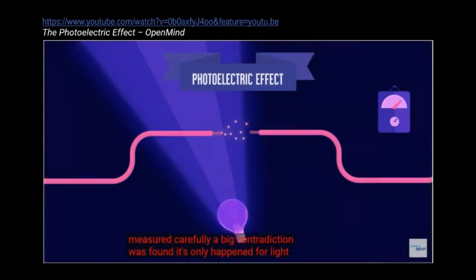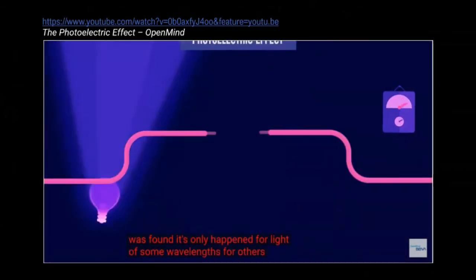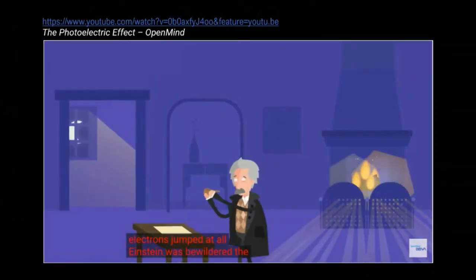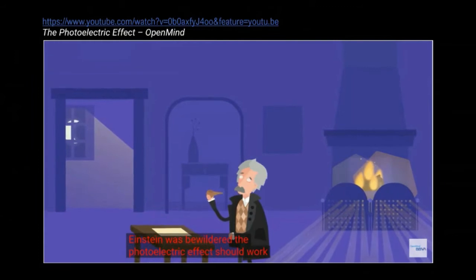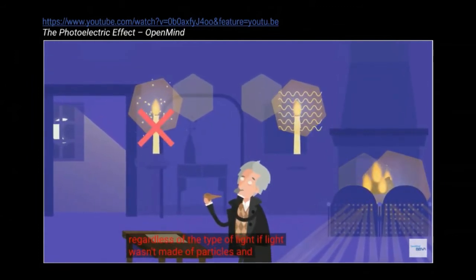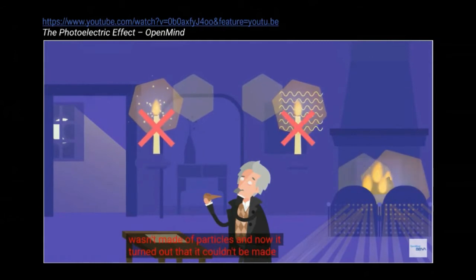It only happened for light of some wavelengths. For others, no electrons jumped at all. Einstein was bewildered. The photoelectric effect should work regardless of the type of light. If light wasn't made of particles, and now it turned out that it couldn't be made of waves, what was it made of?